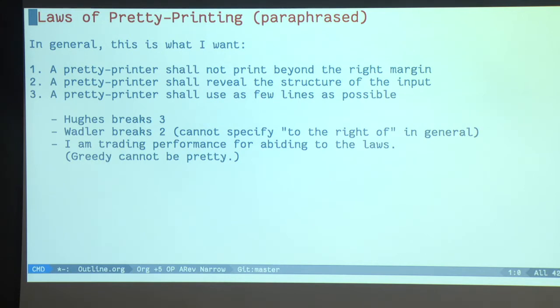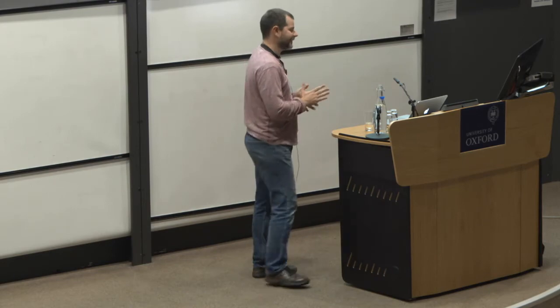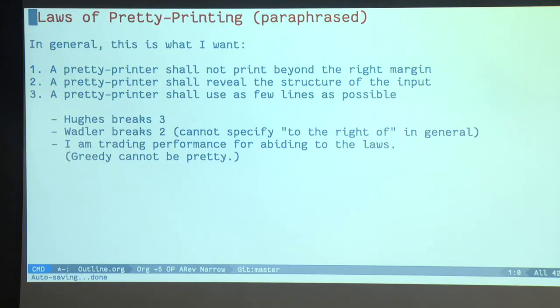A pretty printer shall not print beyond the right margin. So you have to see everything on the page. Second, a pretty printer shall reveal the structure of the input. That's a little problematic. We're going to see what happens in a second. And lastly, a pretty printer shall use as few lines as possible. And there is priority. So first you fit on the page. Then you reveal the structure of the input. And finally, you optimize the length.